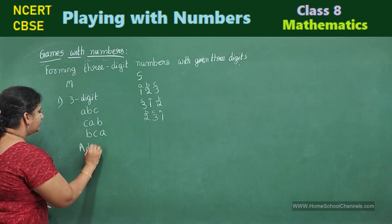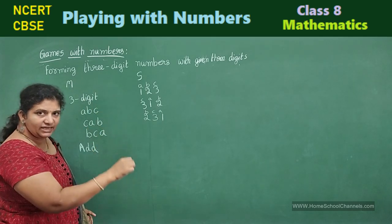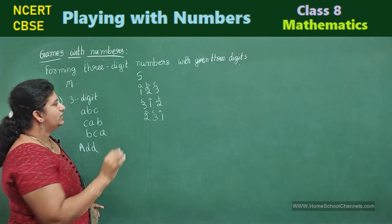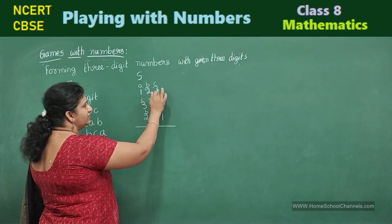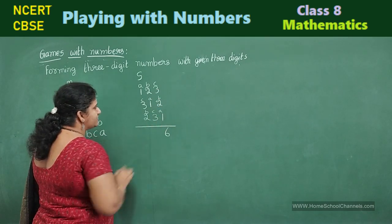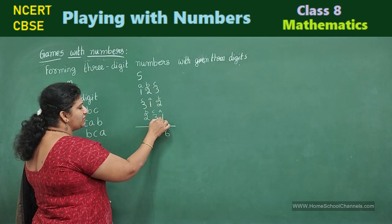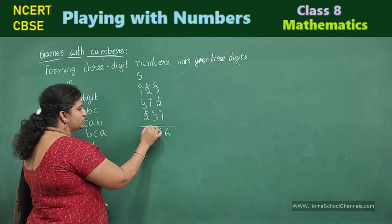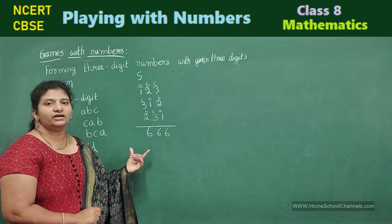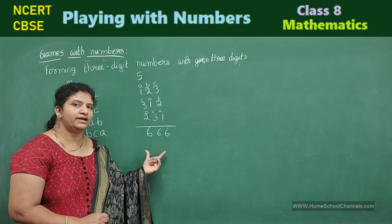Add. Add these three three digit numbers. Let us start adding. Forget about these letters. Three plus two, five. Five plus one, six. Two plus one, three. Three plus three, six. One plus three, four. Four plus two, six. So, the total what you got? 666.